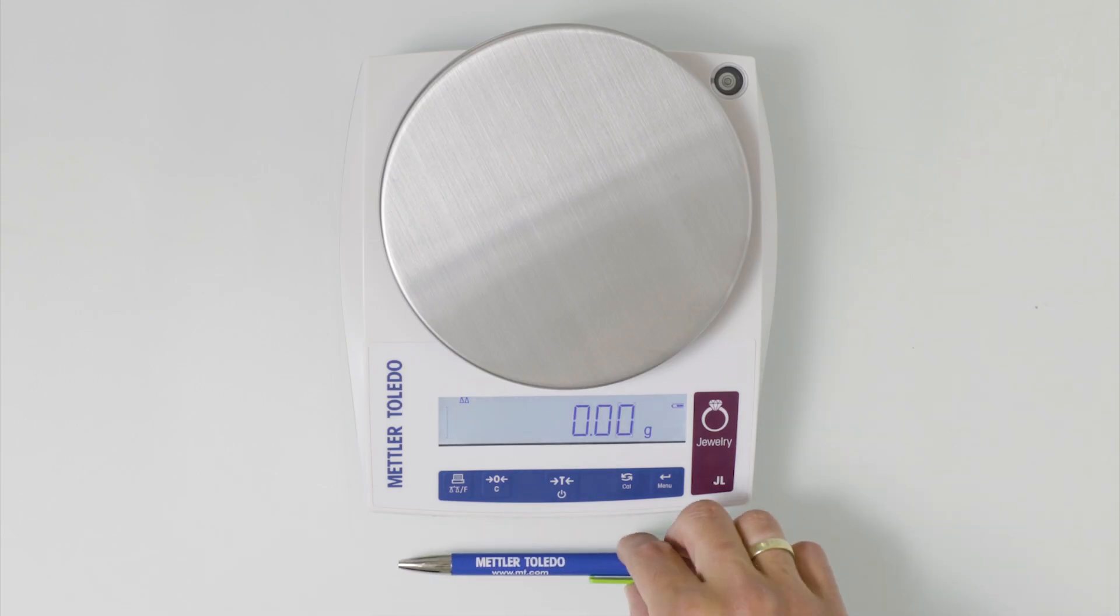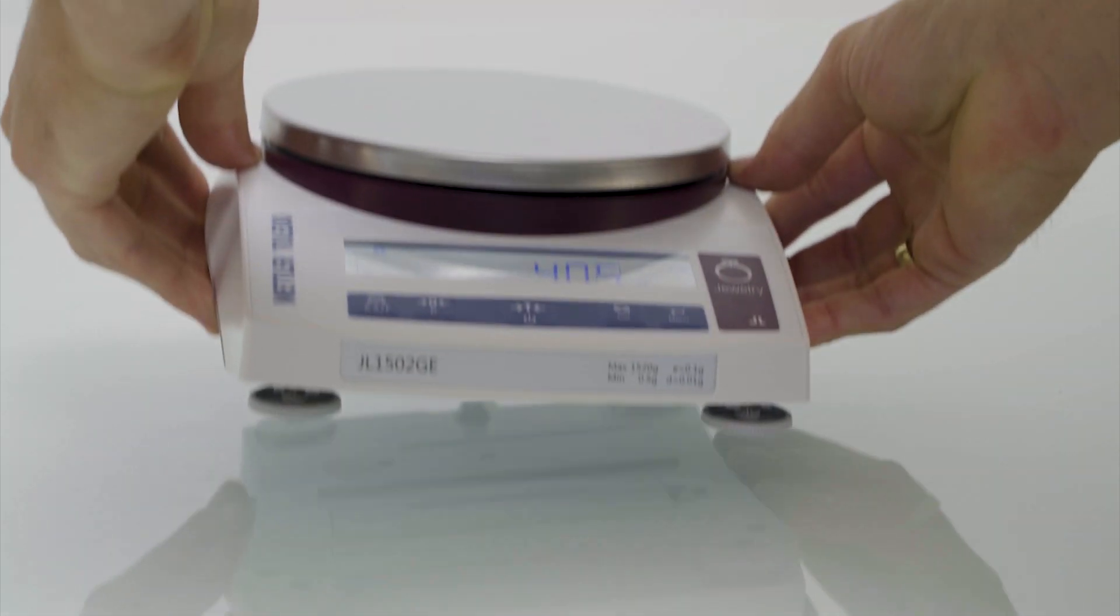The ultra compact design of the JL makes them perfect for small spaces. They are solidly built from quality materials and are still light enough to pick up and carry anywhere you want to weigh.